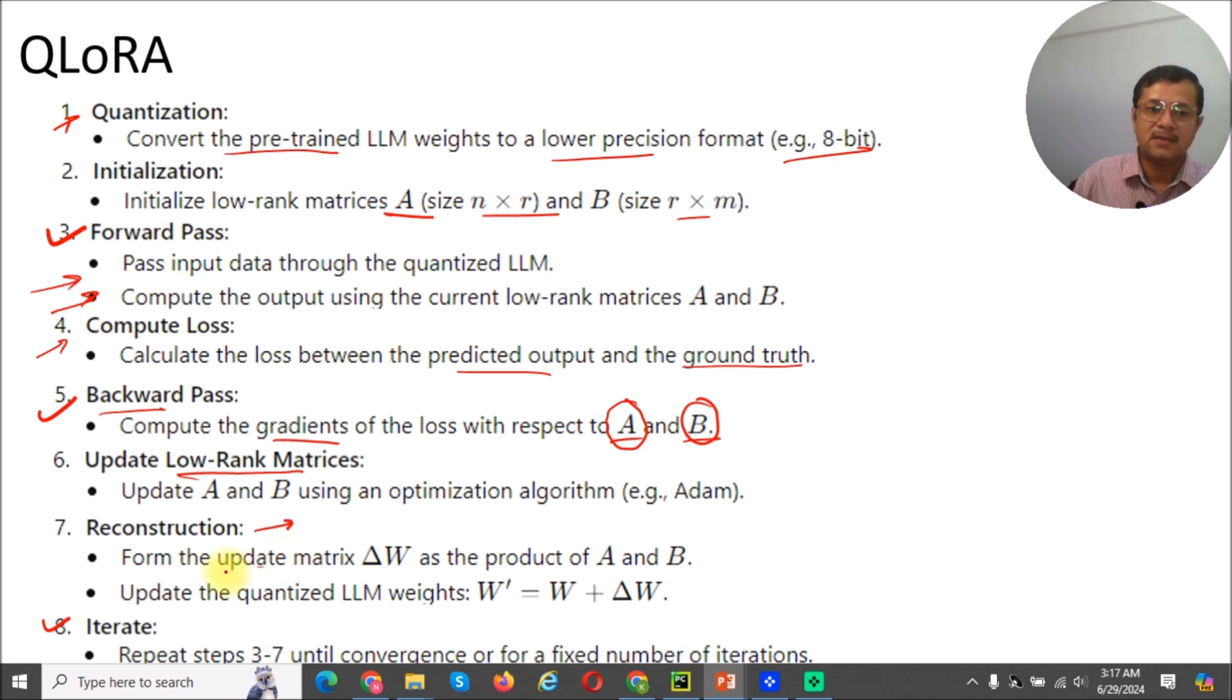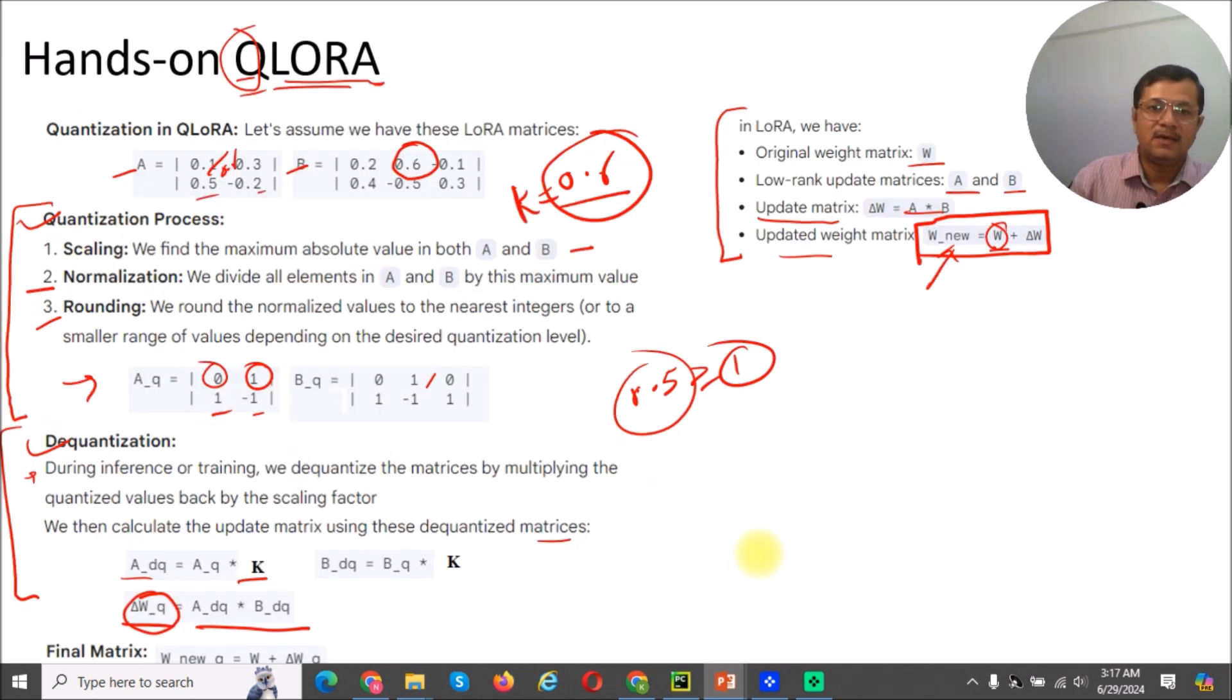And after that, we reconstruct. So reconstruct means we will calculate the update matrix delta by using this, and after that, we will repeat this entire process. So this is the final matrix computation stage. This is similar to our low-rank adaptation techniques.